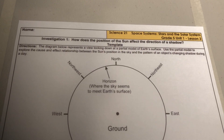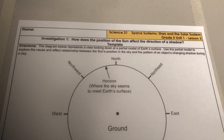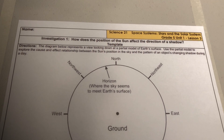Investigation 1. You notice patterns in the shadow cast by an object throughout a day in the sun's shadow timelapse video. In this investigation, you will construct an explanation for the cause of one of those patterns.